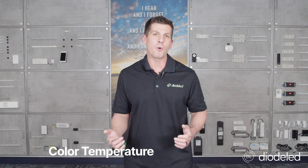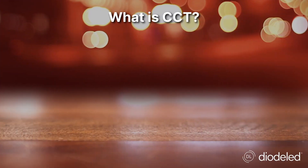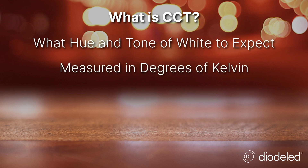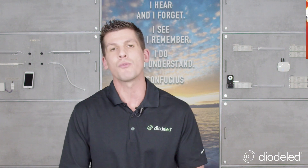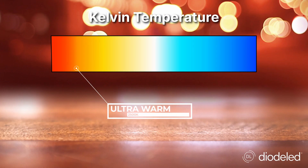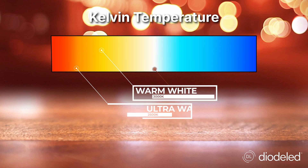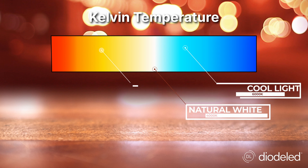This is by far the most important specification we'll learn today. CCT will tell you what hue and tone of white to expect, and it's measured in degrees of Kelvin temperature. Ultra warm would be 2500 Kelvin, warm white would be 3000 Kelvin, natural white would be 4000 Kelvin, and then when you get up to those high cool blue lights, that would be 6000 Kelvin.